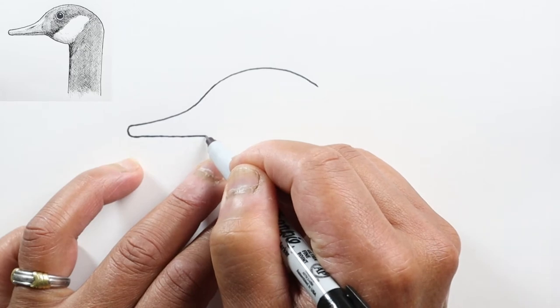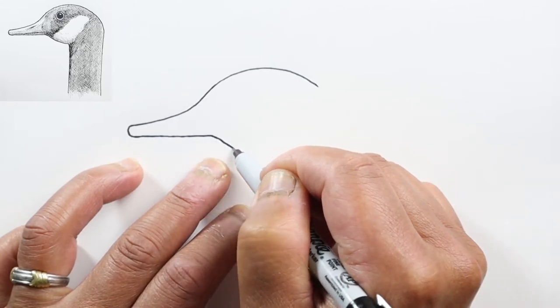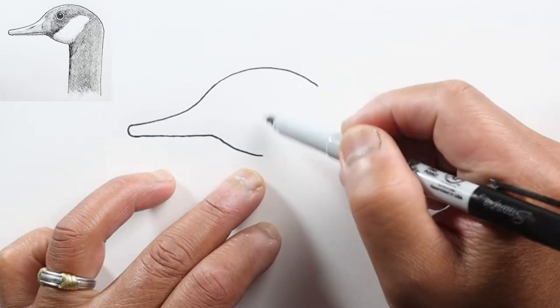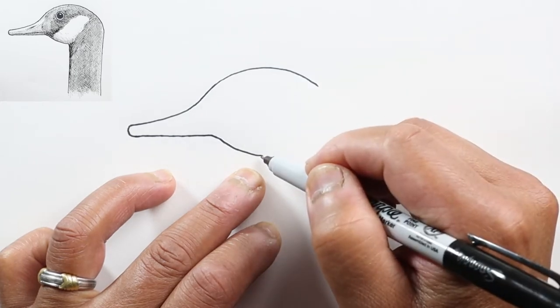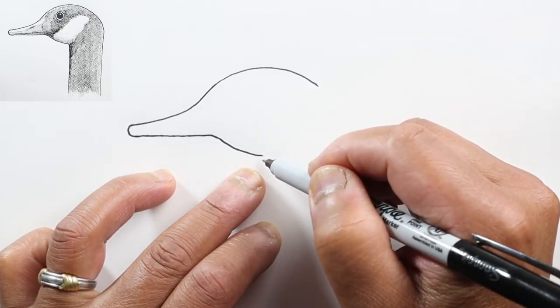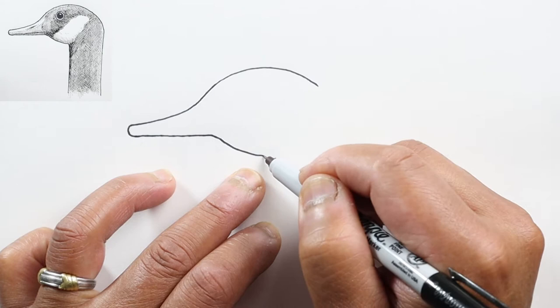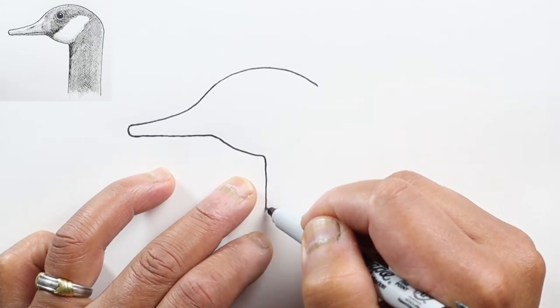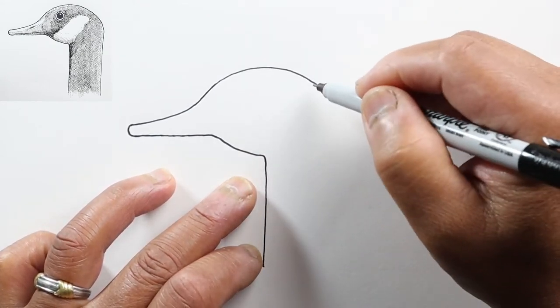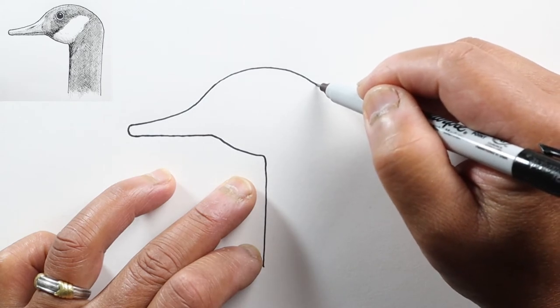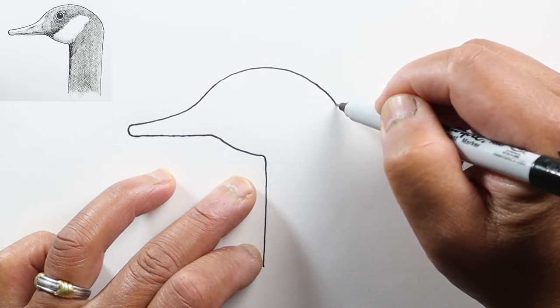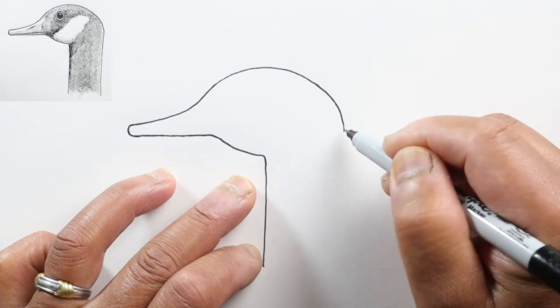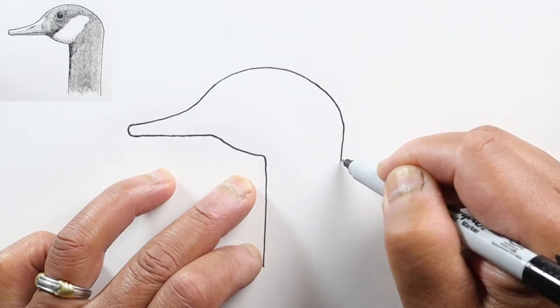The cheek will be right here, so there'll be a little bit of a curve that goes this way. At the midpoint of this head is where the cheek then curves into the neck.